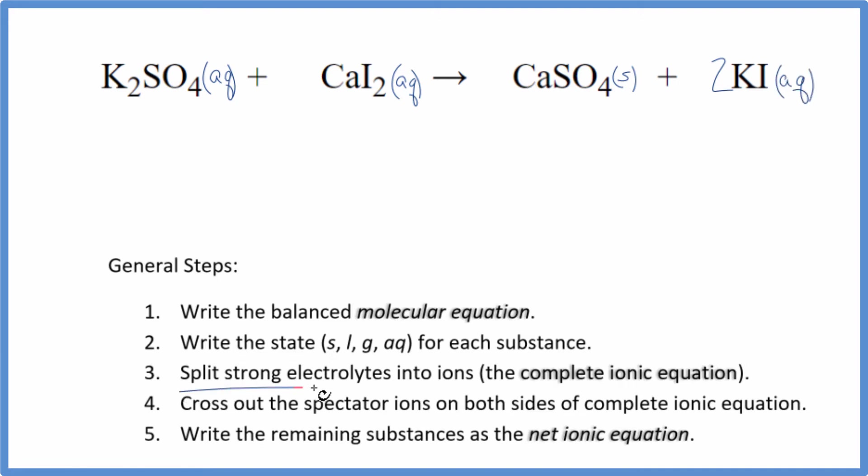Once we have the states, we can split the strong electrolytes into ions for the complete ionic equation. Potassium, that's in group one on the periodic table, so that'll be a plus one. And the sulfate, the whole thing is two minus. Good one to remember. So we have two of these potassium atoms, 2K plus. And I won't write aqueous right now. And then we have that sulfate ion, SO4 2 minus.